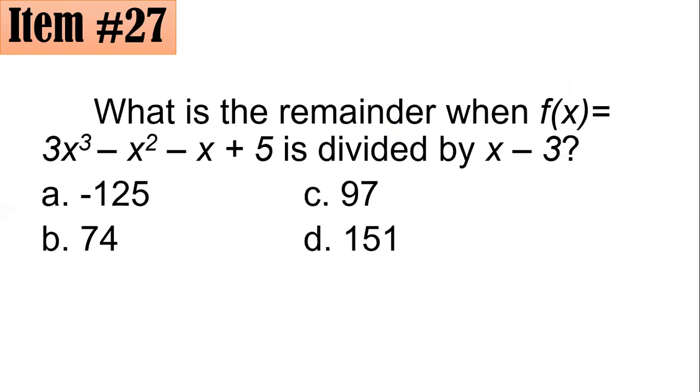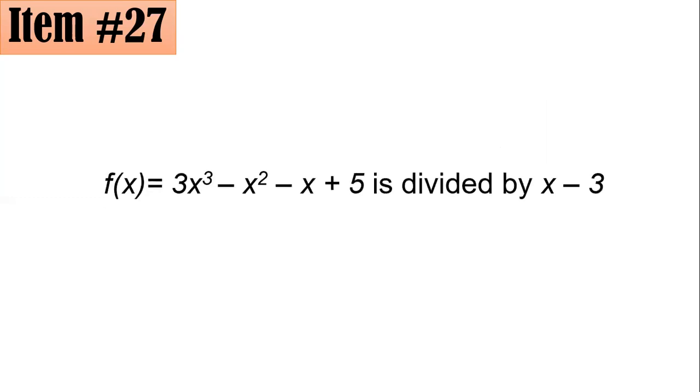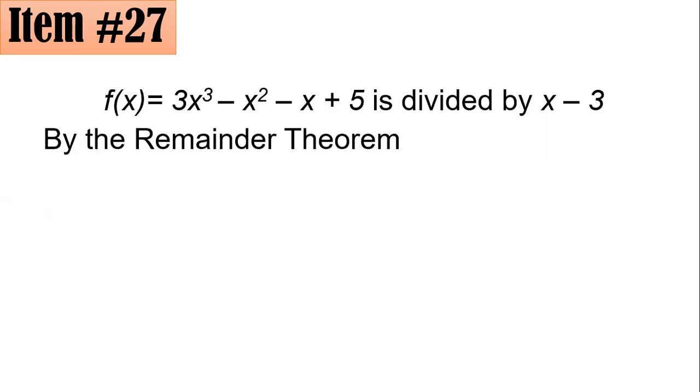There are many ways of doing this. You could invoke the remainder theorem, for example. And by the remainder theorem, you have to equate your divisor to 0. So x - 3 = 0, or x = 3.